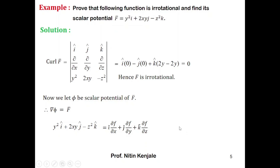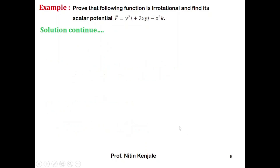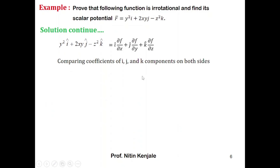Comparing both sides for the coefficients of i, j, and k, we get: ∂phi/∂x = y², ∂phi/∂y = 2xy, and ∂phi/∂z = −z². Now we integrate all these equations with respect to x, y, and z respectively.